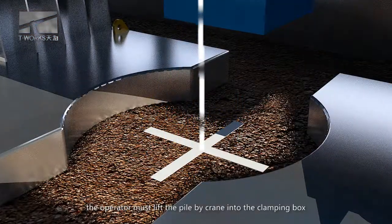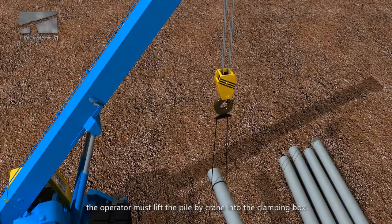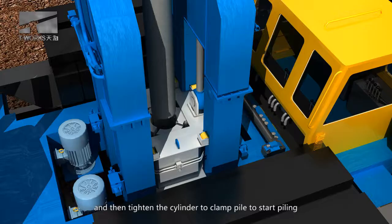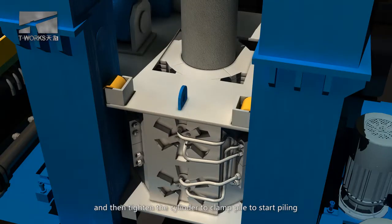The operator must lift the pile by carrier into the clamping box. And then, tighten the cylinder to clamp pile to start piling.